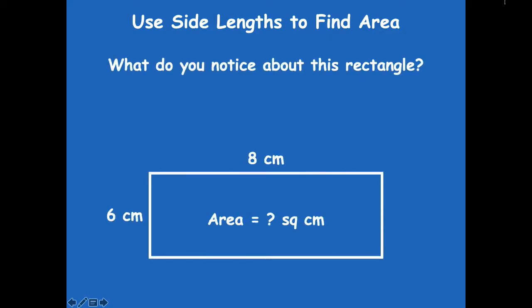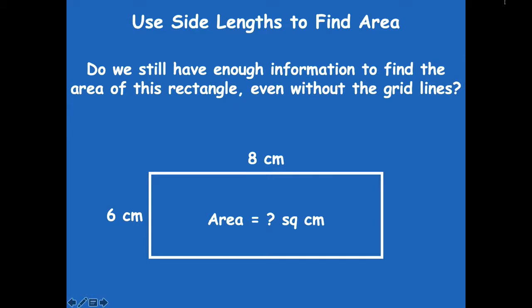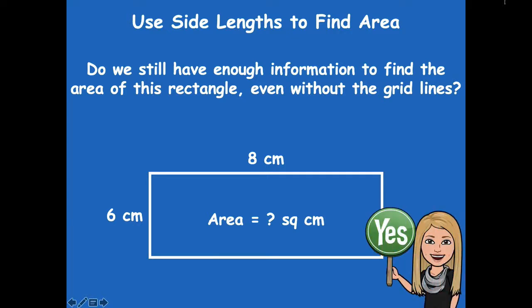What do you notice about this rectangle? We know both the side lengths, but we don't know the area and there's no grid in this one. It's an area model because there's no grid on the inside — an area model is just a rectangle without a grid. Do we still have enough information to find the area of this rectangle even without those grid lines? Yes, we sure do.